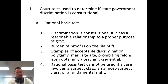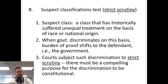Here are examples of discrimination that we allow: we discriminate against polygamy, we discriminate on marriage age, and we prohibit felons from being teachers. Then there's the Strict Scrutiny Suspect Classification Test. A suspect class is a class that has historically suffered unequal treatment on the basis of race or national origin.